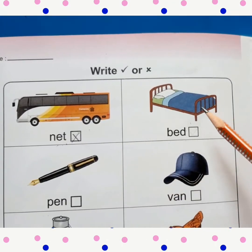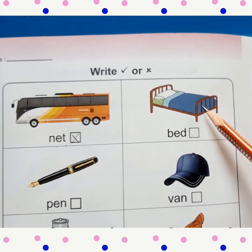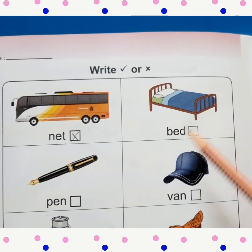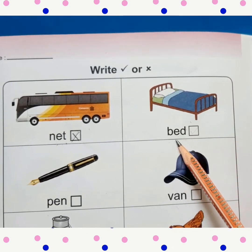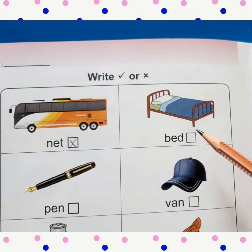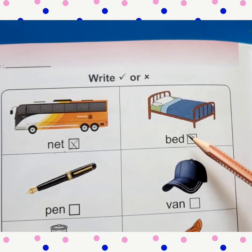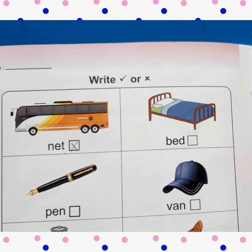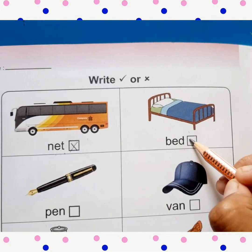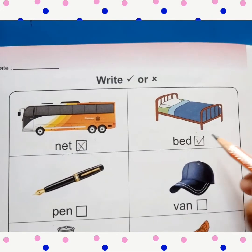Let's do another one. Children, which picture is this? Bed. And let's read the spelling. B-E-D bed. So here, the spelling matches with the picture. So we will put tick.